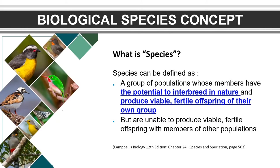Students, do you know what is species? Species can be defined as a group of populations whose members have the potential to interbreed in nature and produce viable and fertile offspring of their own group. But they are unable to produce viable and fertile offspring with members of other populations.